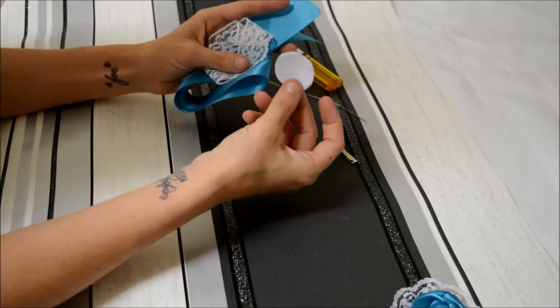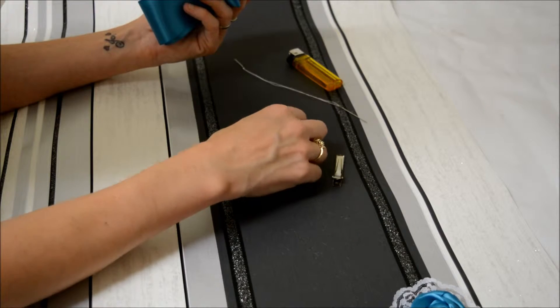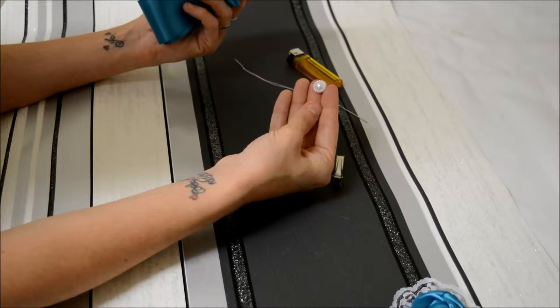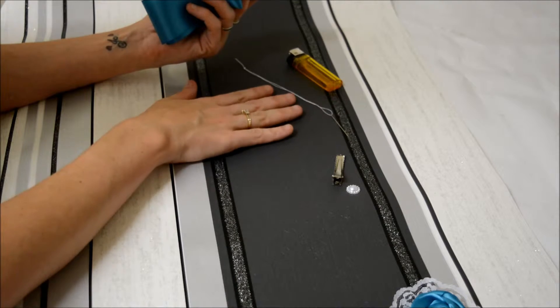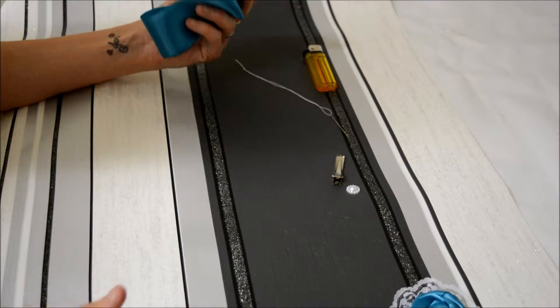a felt circle, a clip, a gem for the centre, a needle and thread, a lighter, some scissors and a glue gun.